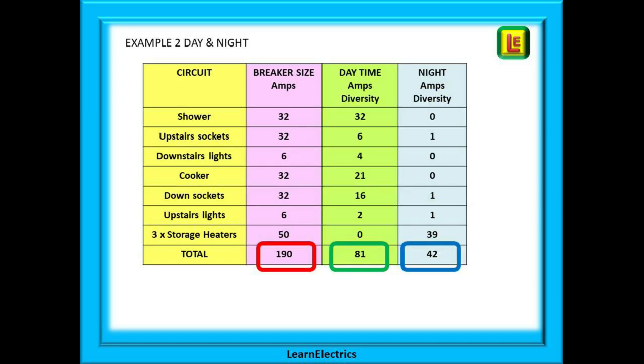Look at this slide now. The same dwelling, the same numbers, but now we'll make adjustments for daytime and nighttime use. By moving the night storage heaters from the daytime, we can immediately see that the daytime usage is reduced to 81 amps, well below the rating of our 100 amp main fuse. In the night column, we have the storage heaters at 39 amps, and we've also sensibly included some small current for the lighting and socket circuits. People will read in the night, go to the toilet, etc., and the nighttime current is now 42 amps. So day or night, the current demand for the property is well below the 100 amp main fuse rating.